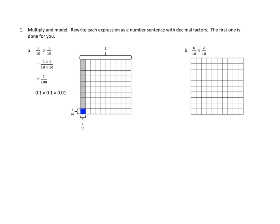Problem number one. I'm not going to do 1B for you, I'll get you started, but I wanted to go through the instructions for problem number one and do one of the problems with you completely. So let's multiply and model, rewrite each expression as a number sentence with decimal factors. The first one is done for you. So they have this problem, 1a, one-tenth times one-tenth. I'm going to look at the diagram first, because I always like my models first. And I think I see what they did here.